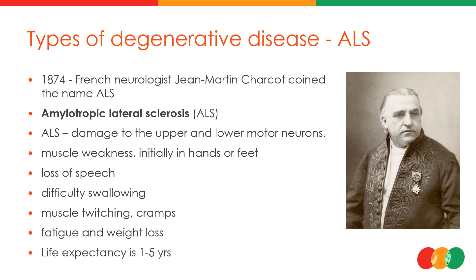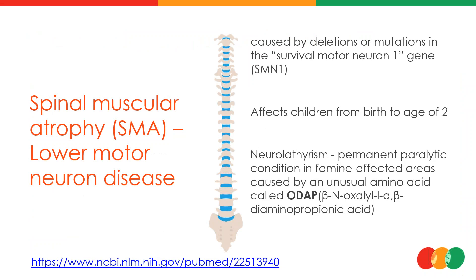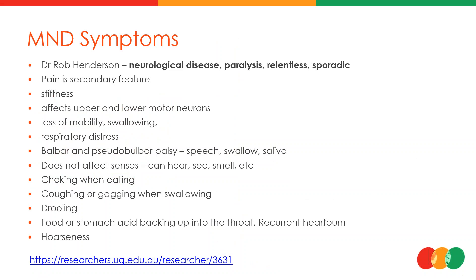There are many diseases that mimic MND. ALS — amyotrophic lateral sclerosis — is rather common, causing damage to both upper and lower motor neurons with symptoms including muscle weakness, loss of speech, difficulty swallowing, fatigue, and weight loss. Life expectancy with ALS can be up to five years. Spinal muscular atrophy, or SMA, affects the lower motor neurons and impacts children from birth to age two; an unusual amino acid found in SMA patients is ODAP, a diamino-propionic acid derivative.